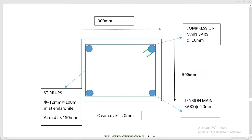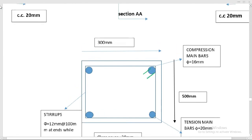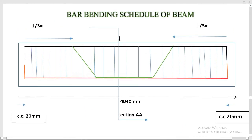Clear cover is 20 millimeters from all sides. To find the end length, we use the formula L/3, where L is the length after excluding the concrete cover — concrete cover is not included in this length. Stirrups at the ends have 100 millimeter spacing, and at the mid, stirrups have 150 millimeter spacing.